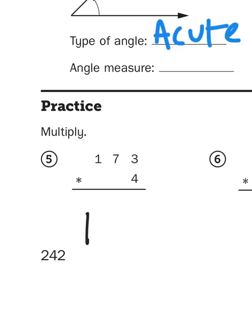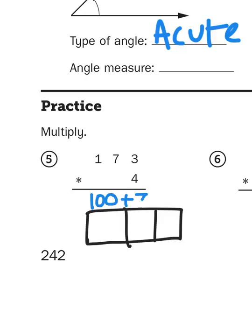So the first thing I am going to do is I am going to set up a box and a partitioned rectangle is split up by place value. So I am going to put my one hundred to the left, my seven tens in the middle, and my three ones over here at the side. I am going to multiply each one of those parts by four.